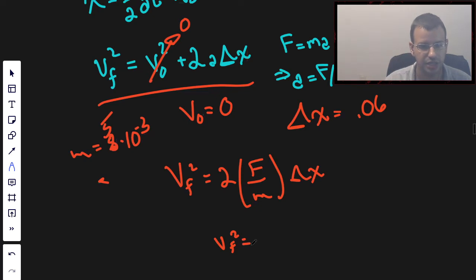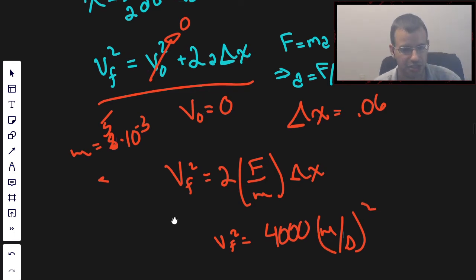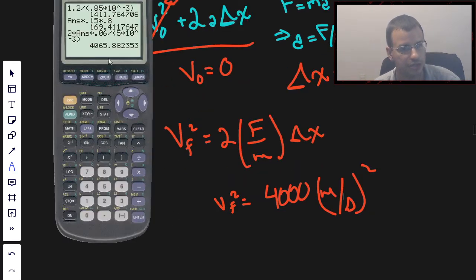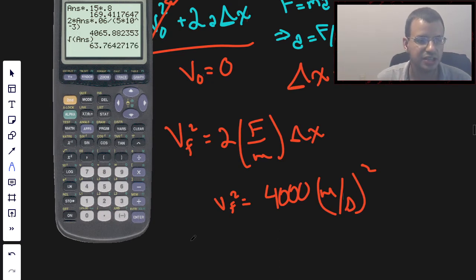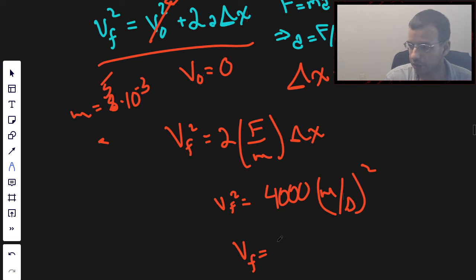And this gives us an answer of V final squared is 4,000 meters per second squared. Then we want to square root that answer, and I get 63.8. V final equals 63.8 meters per second, which is pretty quick. Reasonably quick.